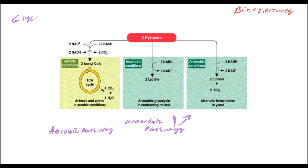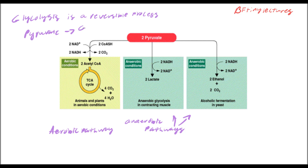Glycolysis is actually a reversible process. After exercising, you feel sore because your muscles have a buildup of lactic acid. If you rest for three to four days, the pain goes away — that's actually the lactic acid converting back into pyruvate, and then pyruvate converting back into glucose molecules. So pyruvate can go back to glucose.